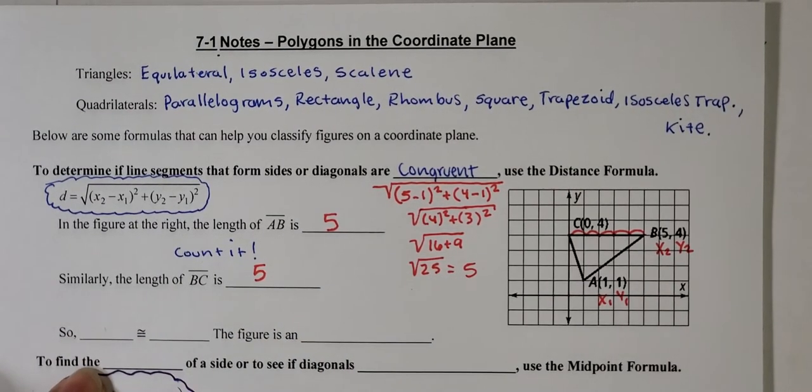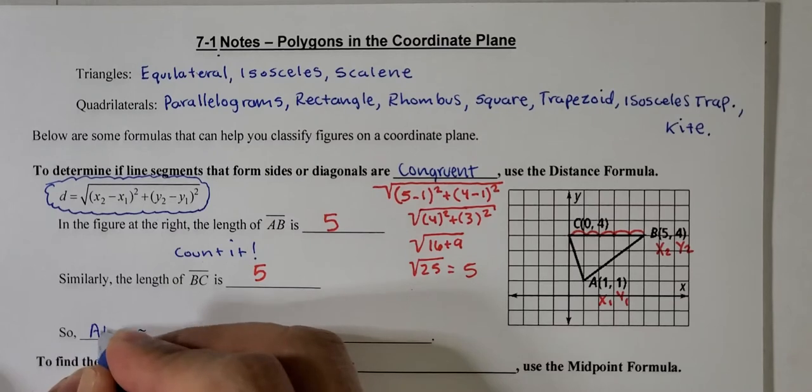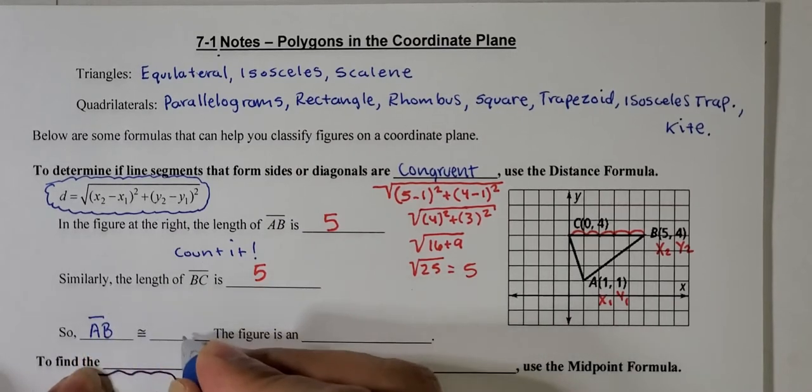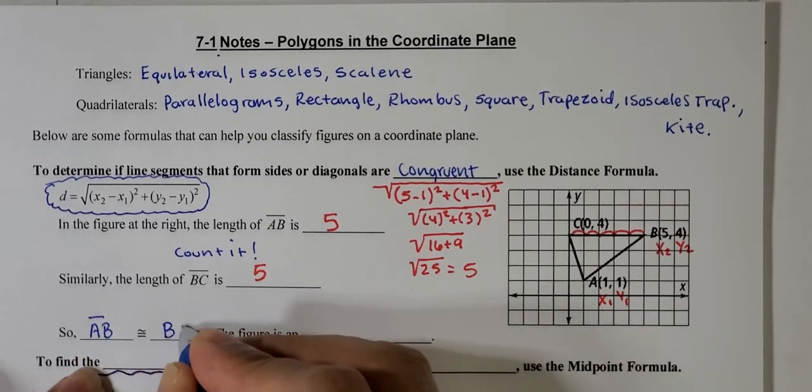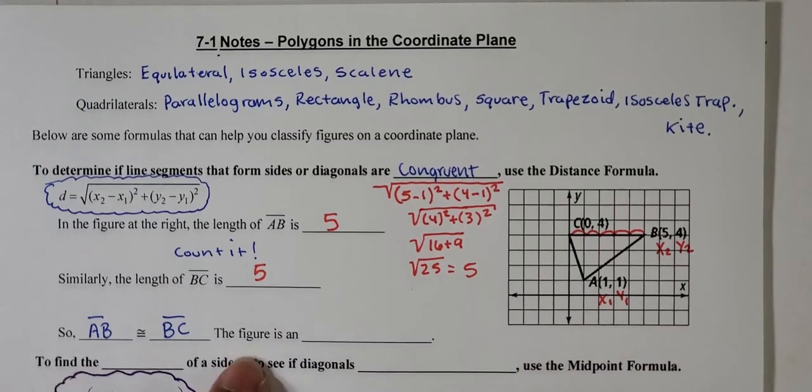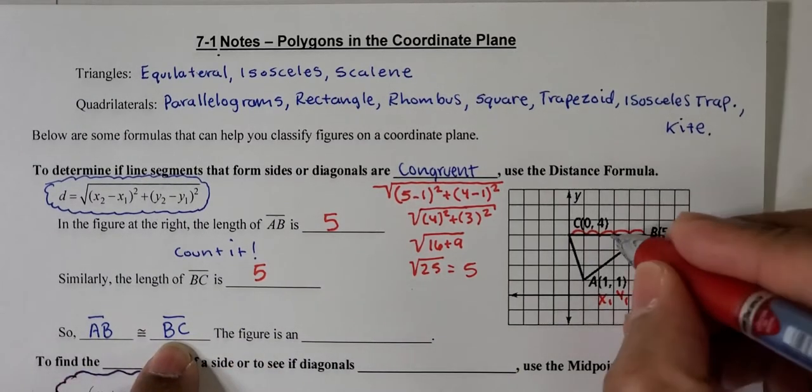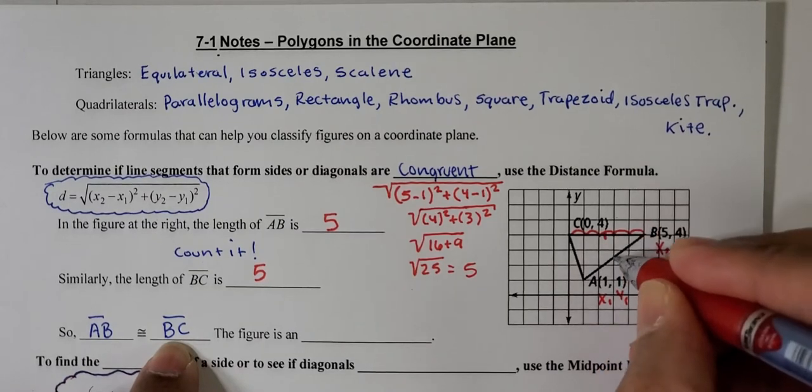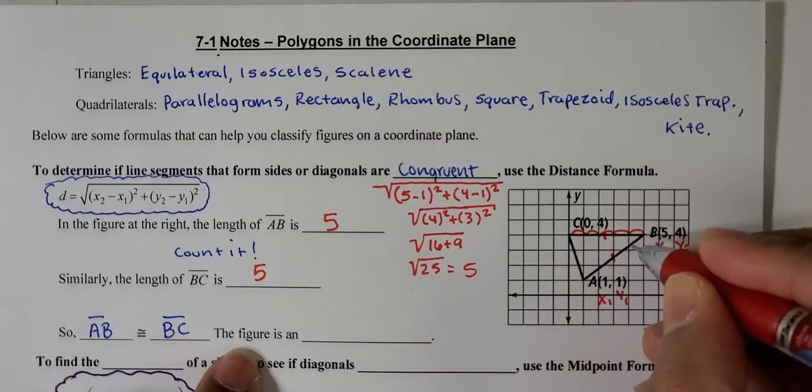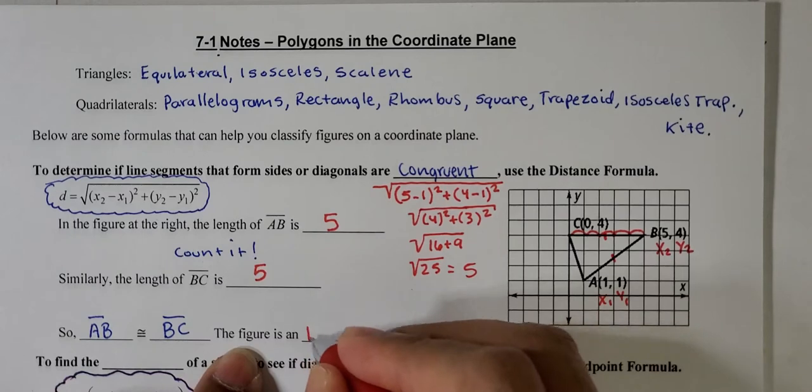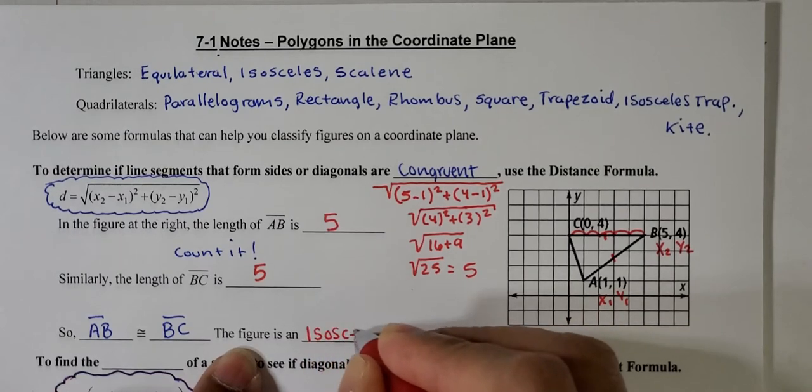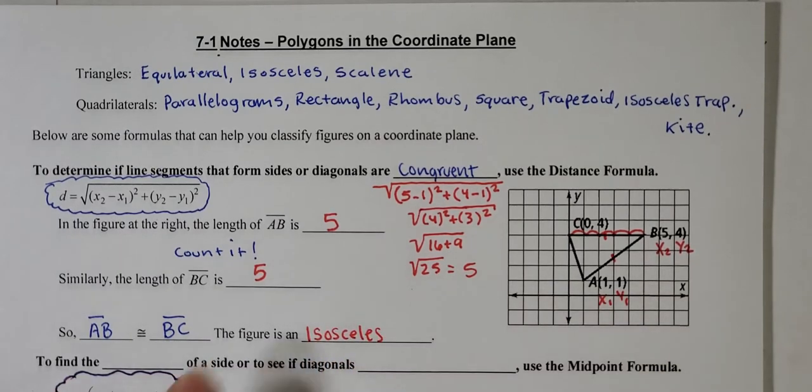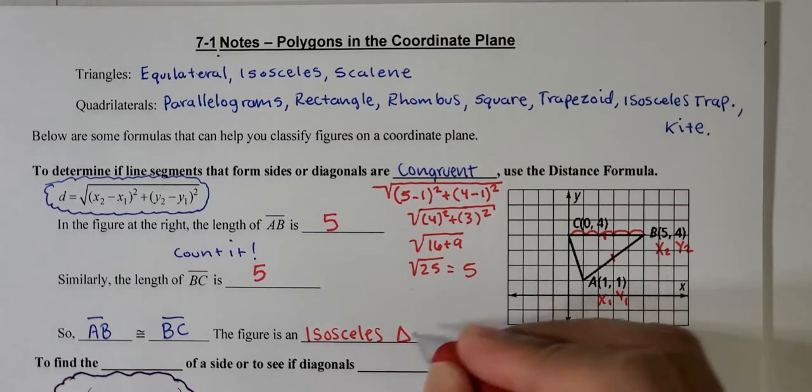So far we have that side AB is congruent to side BC. Since we see that these two sides are congruent, then the figure has to be an isosceles triangle. So we would classify it as an isosceles triangle.